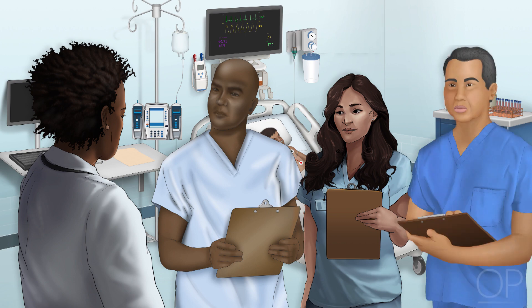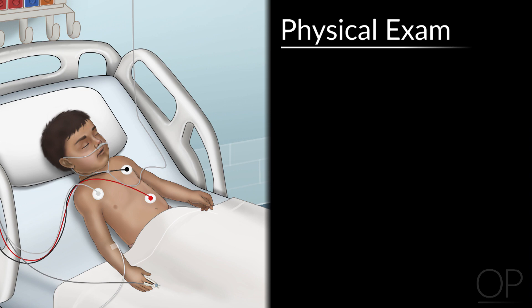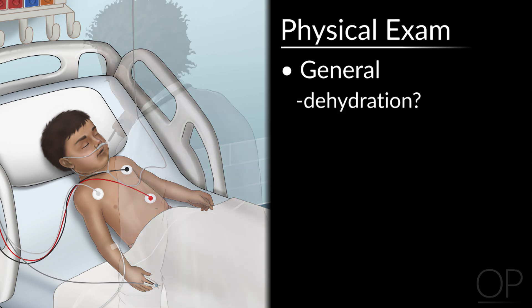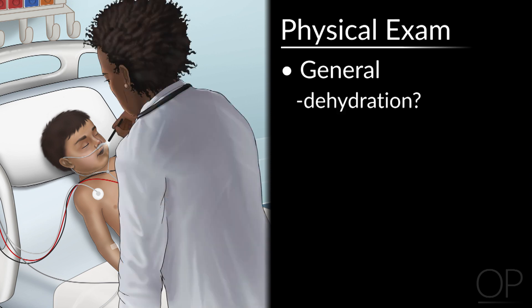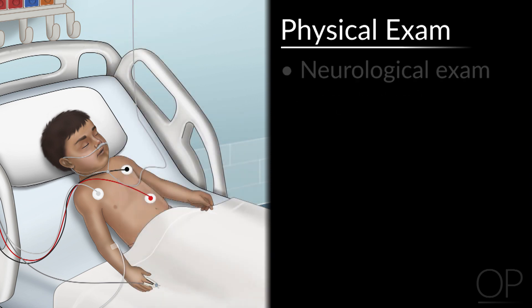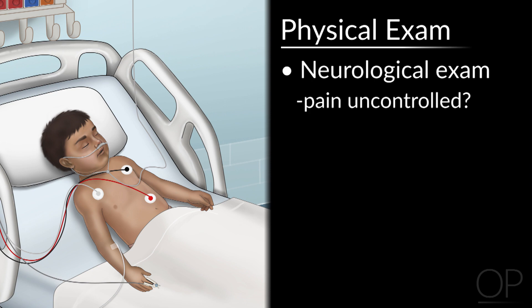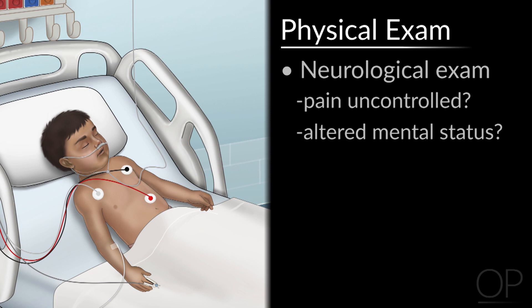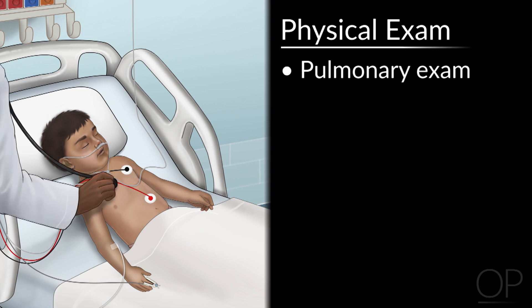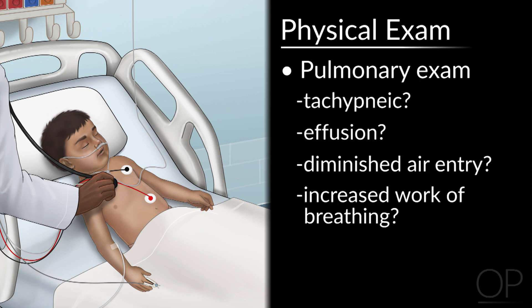On physical examination, let's focus by systems. On general appearance, do they look ill? Do they look toxic? What is their sign of hydration based on their mucous membranes? From a neurologic perspective, are they in severe pain? Is their pain controlled? Are they responsive? Do they have an altered mental status? In a pulmonary exam, is the patient tachypneic? Could they have an effusion? Do they have diminished air entry or increased work of breathing?